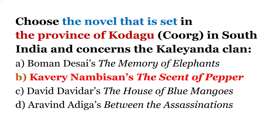So you also get to know other famous works by Indian writers: Boman Desai's The Memory of Elephants, David Dawes' The House of Blue Mangoes, and Arvind Adiga's Between the Assassinations.